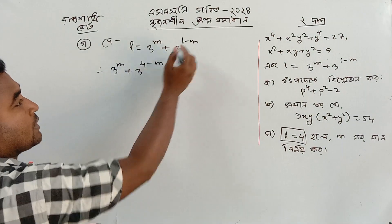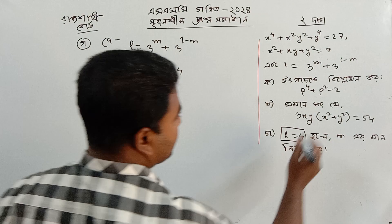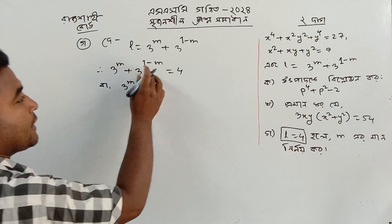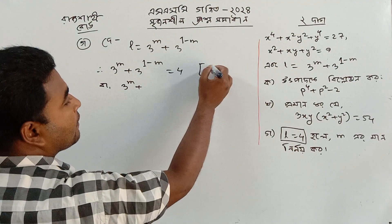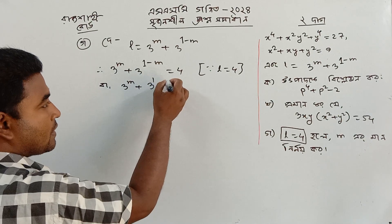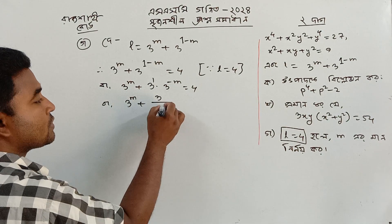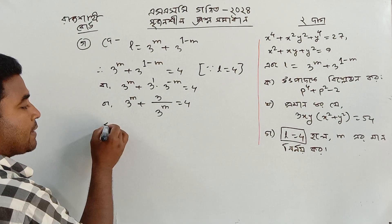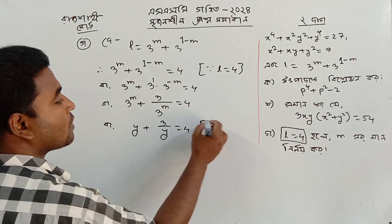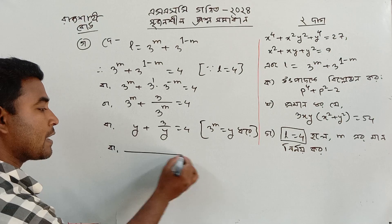We call the number 4 to the power l minus m plus 4 to the power, and this is 1. So what are the terms of 3 to the power m? The term is 3 to the power 1 into 3 to the power m equal to 4. Inversely, 3 to the power m equals 4. The term of this is y.